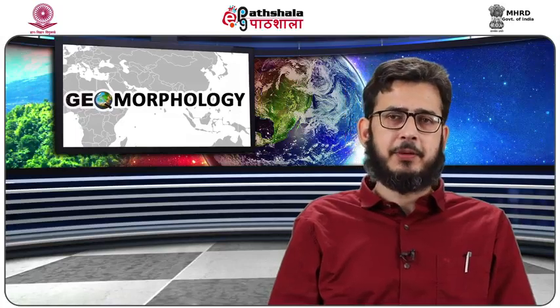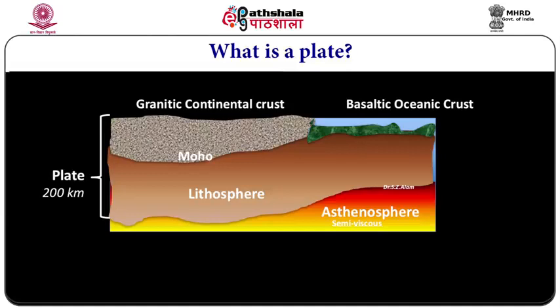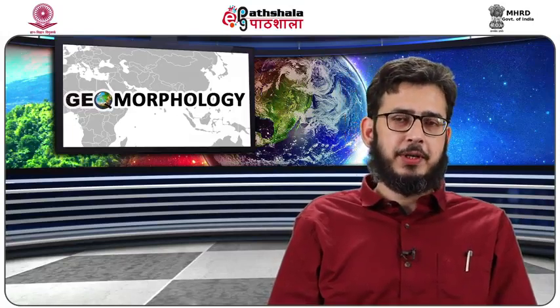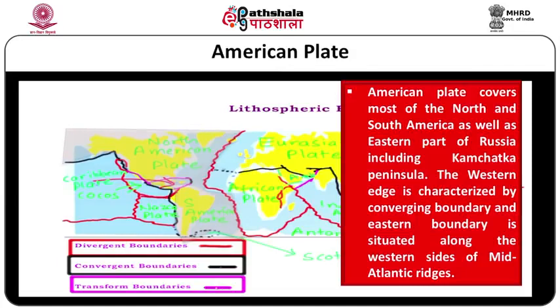The Pacific plate is entirely oceanic lithosphere covering the Pacific Ocean basin. Its relative motion is north-westerly, which has resulted in the formation of subduction zones. The southern and eastern boundary is characterized by a spreading boundary, and in California this plate makes an active transform fault. The American plate covers most of the North and South American continents as well as the eastern part of Russia, that is the Kamchatka Peninsula. Its western edge is characterized by a converging boundary and the eastern boundary is along the western side of the mid-Atlantic ridges.